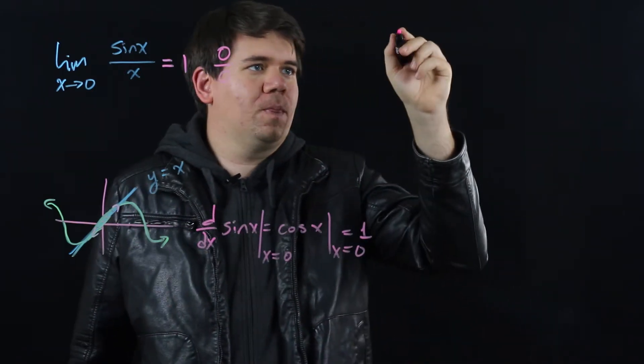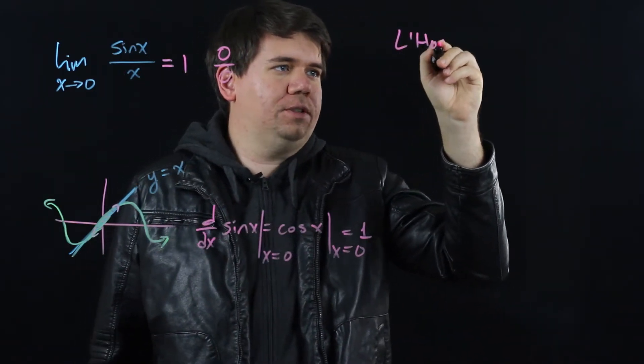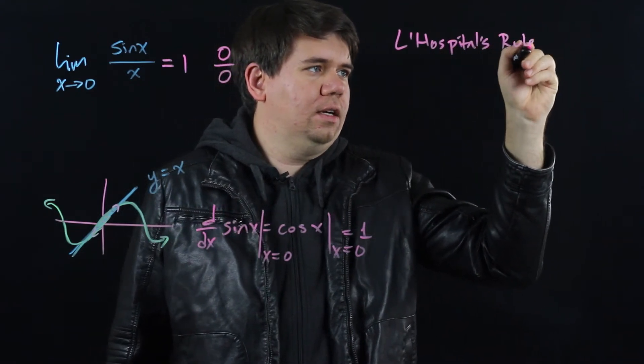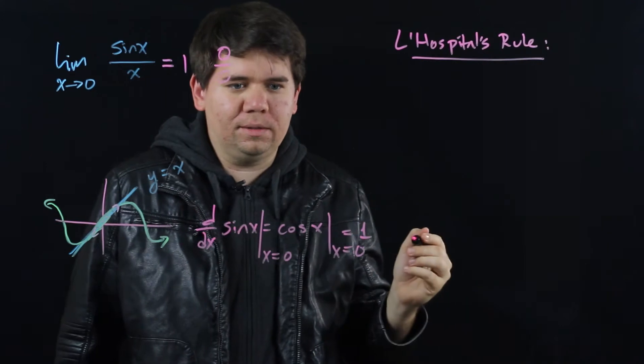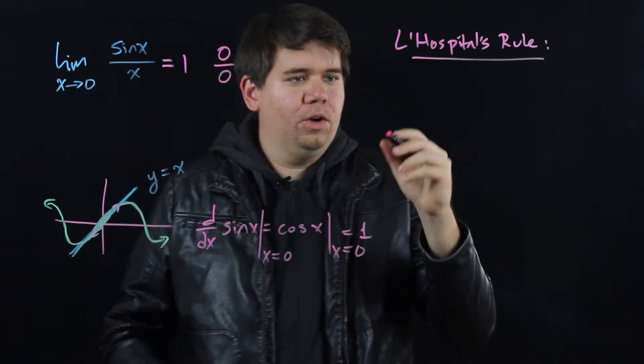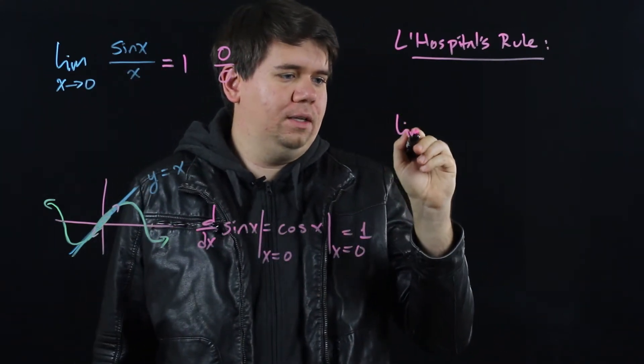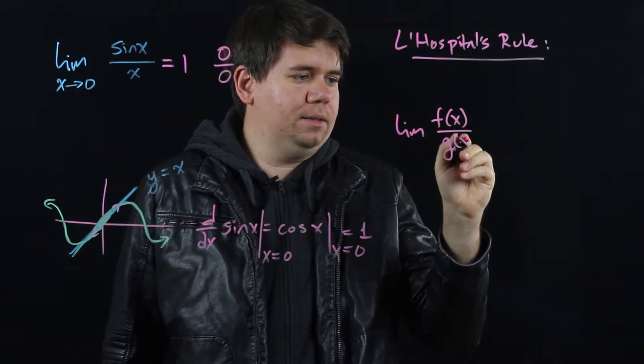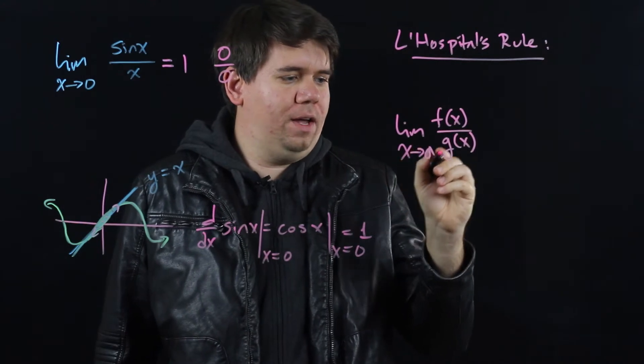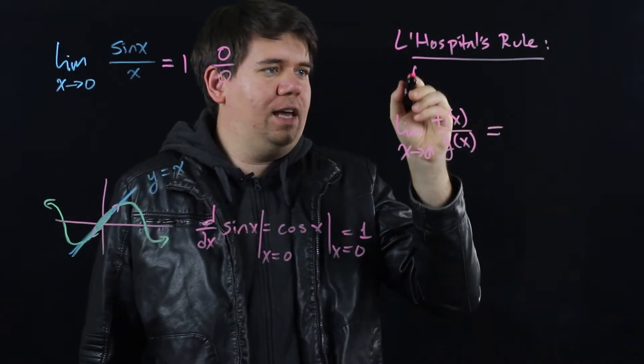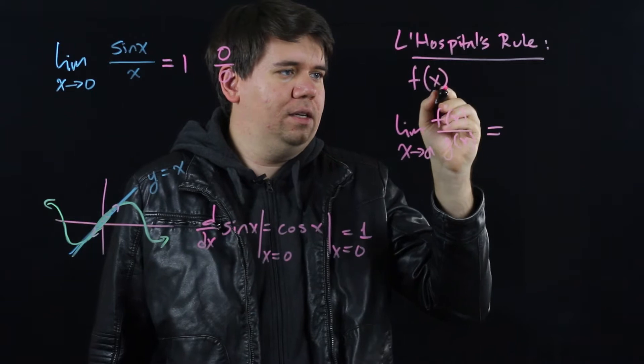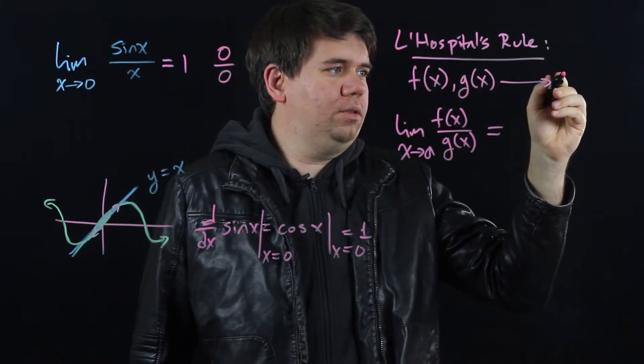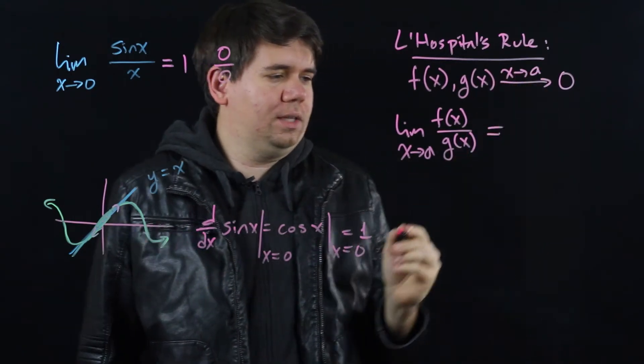We can make this idea more precise with something called L'Hopital's Rule. L'Hopital's Rule gives us a way of calculating limits when you have scenarios like this, when you have some limit of f divided by g as x is going to some value a, such that f and g are both going to 0 as your x approaches a.